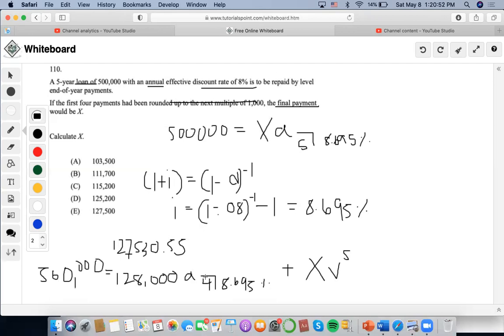So now, I can solve this using my calculator. So $128,000 as the payment, 4 as the number of years, 8.695 as the interest rate, 0 as the future value, compute present value. It's going to be $417,475.56. I'm going to subtract it from $500,000 and I'm going to get $82,524.44. Then I'm going to bring this to the other side to find it. So I'm going to multiply by 1.08695 to the 5.